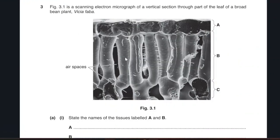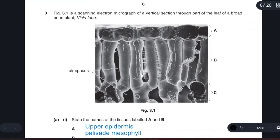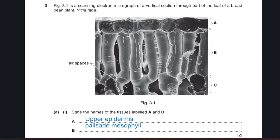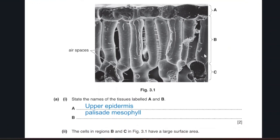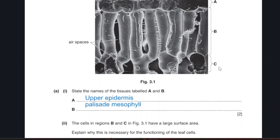Scanning electron micrograph of a vertical section through part of the leaf. State the names of the tissues labeled A and B. A is the upper epidermis. B is the palisade mesophyll tissue. Cells B and C have large surface area. Explain why it is necessary for functioning of the leaves. B and C, large surface area. Why do they have a large surface area?